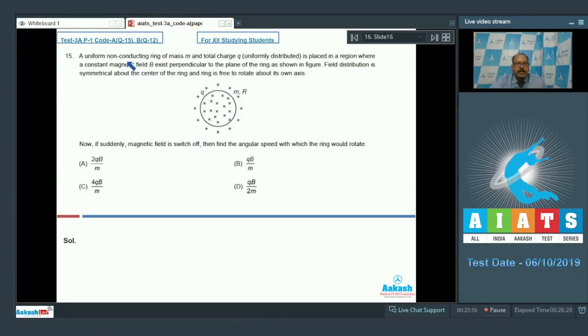Question 15 says, a uniform non-conducting ring of mass M and total charge Q uniformly distributed is placed in the region where a constant magnetic field B exists perpendicular to the plane of the ring as shown in figure. Field distribution is symmetrical about the center of the ring and ring is free to rotate about its own axis. Now, if suddenly magnetic field is switched off, then find the angular speed with which the ring would rotate. Well, this problem involves concepts of electromagnetic induction, the angular impulse and the theorem that angular impulse equals change in angular momentum.